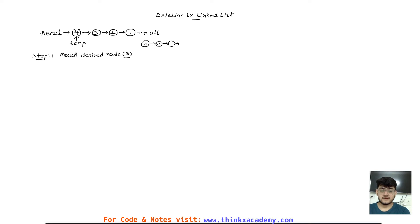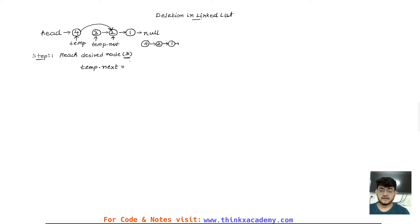So we will write the code. Now we have easy methods to reassign these references. I need to reassign temp.next, which is this reference. temp.next is pointing to three, and the node after that is temp.next.next. So I want to reassign temp.next — which is this reference right here — to temp.next.next. So I will write: temp.next becomes temp.next.next.